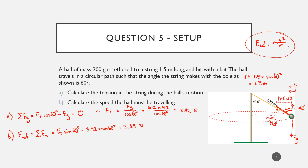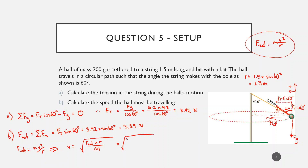Now we can work out the speed using F_net = mv²/r, which rearranges to v = √(F_net × r / m). Substituting in F_net = 3.39 N, r = 1.3 m, and m = 0.2 kg, we get v ≈ 4.7 m/s. So for the ball to travel in this circular path around the pole on this string, it must be moving at 4.7 meters per second.